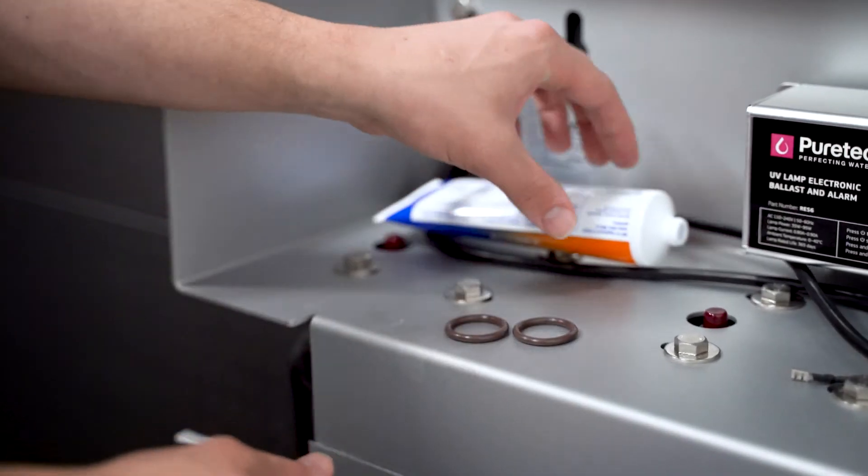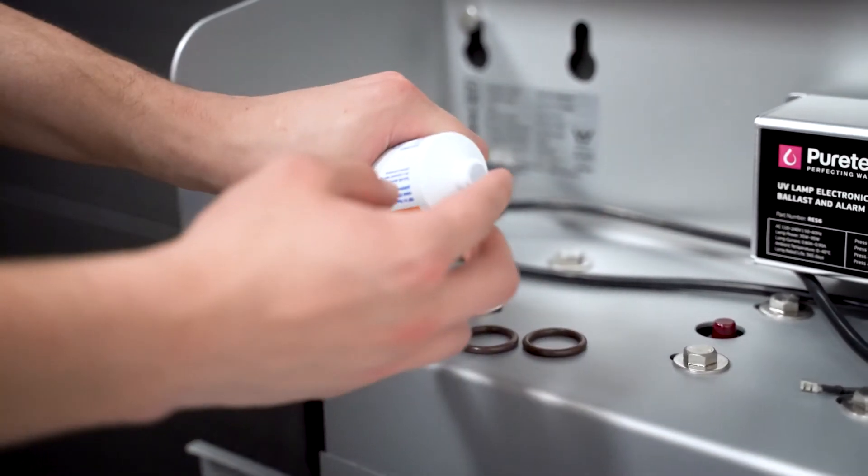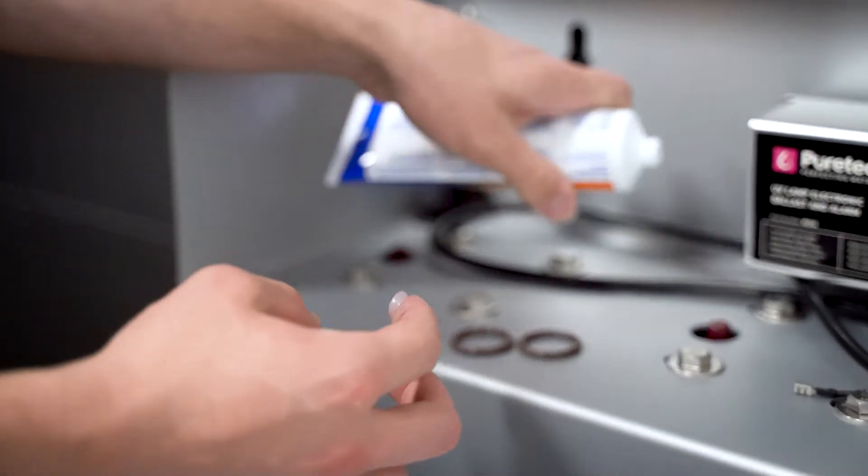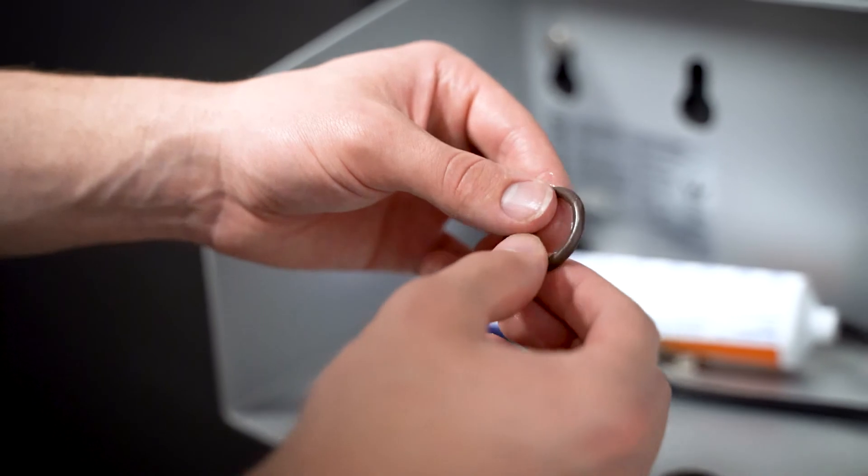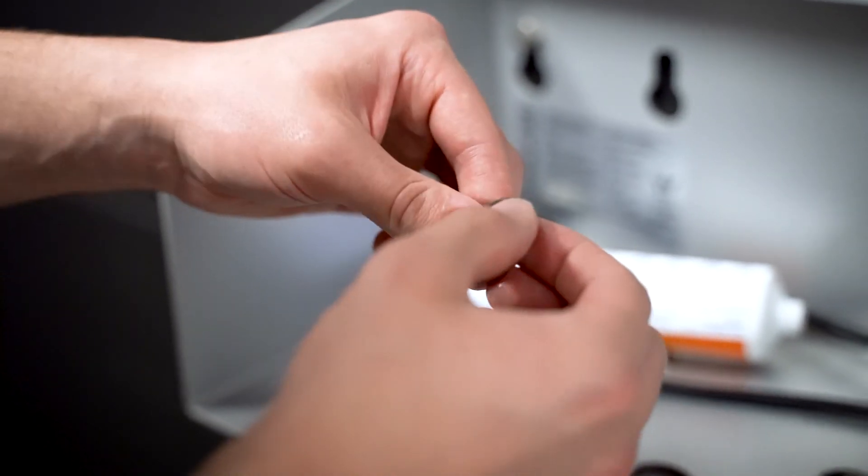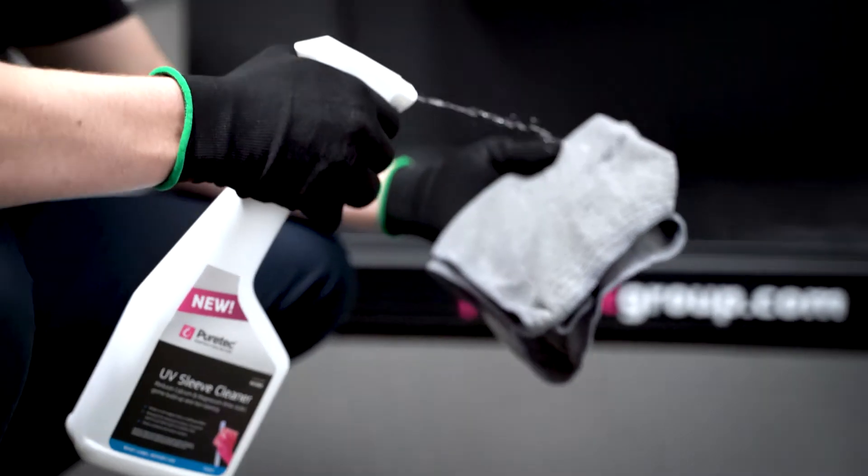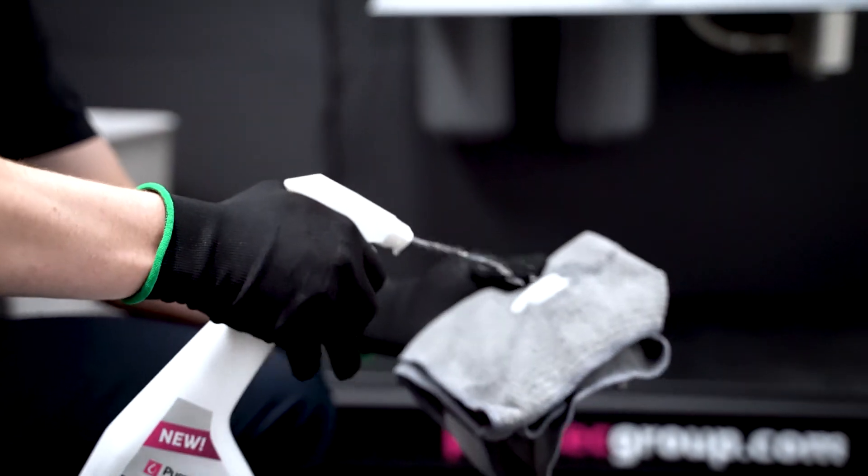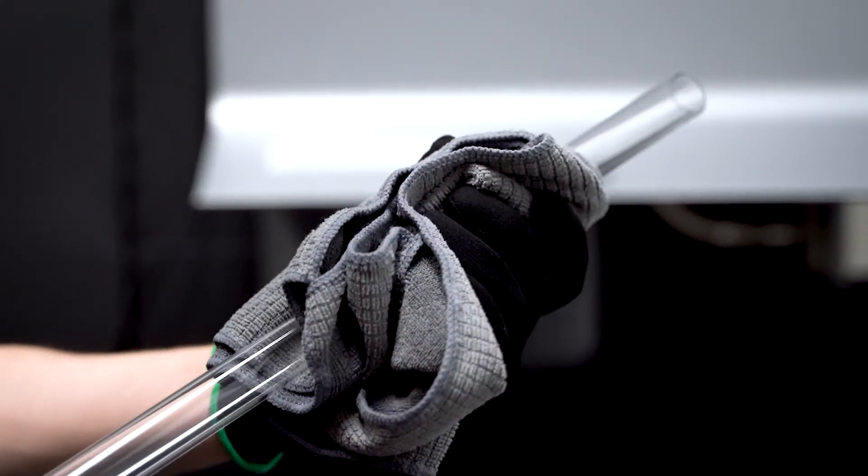Ensure the o-rings are lubricated and if necessary apply a light coating of food grade silicone lubricant or similar. Also check o-rings for damage and replace if necessary. Clean the quartz sleeve with PureTech sleeve cleaner. If the glass will not come up clear or clean, you'll need to install a new replacement quartz sleeve.